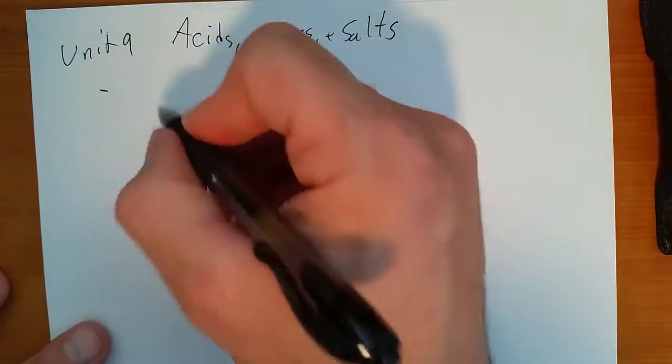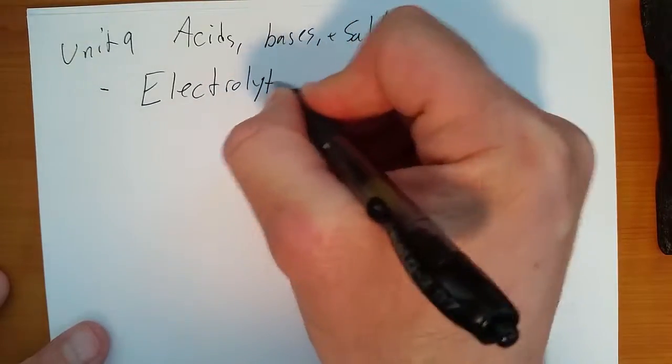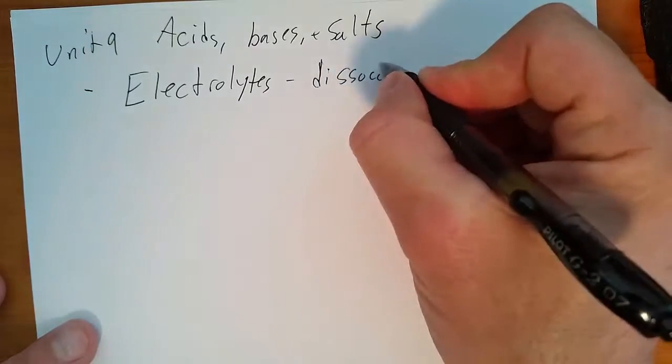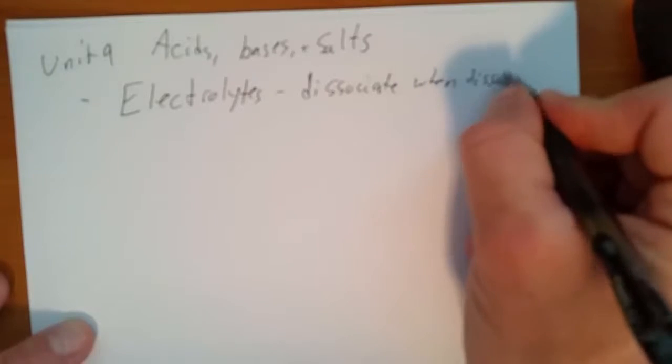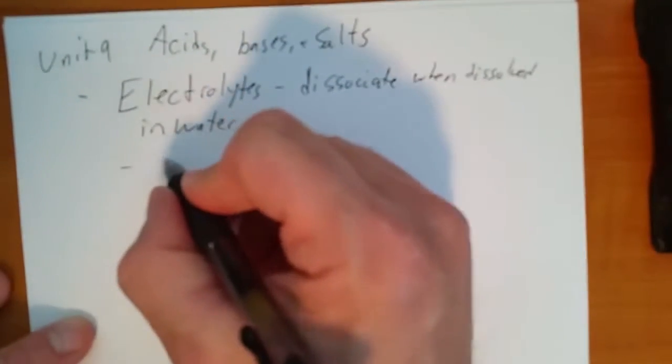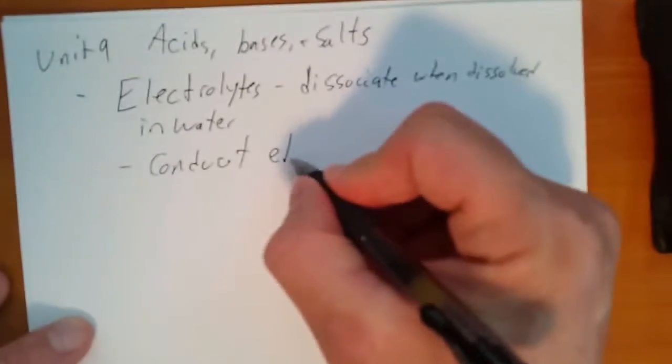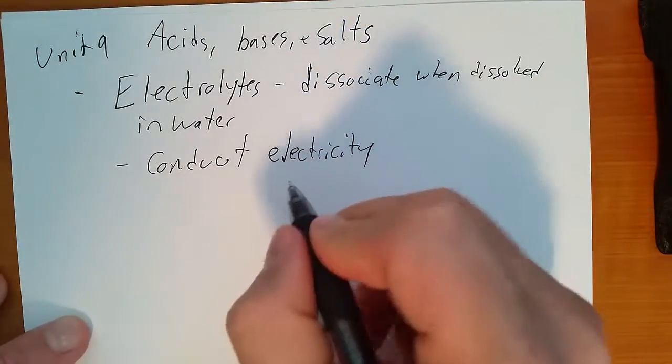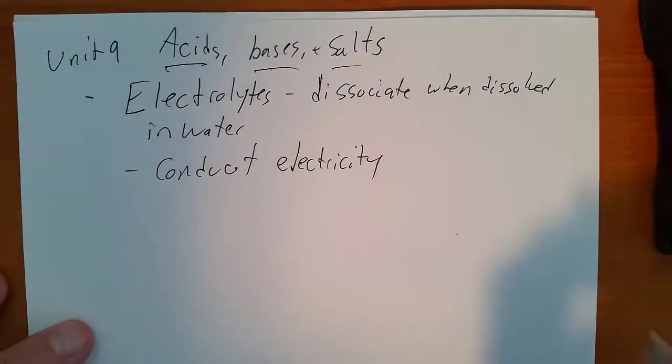All right, so one of the earlier things we talked about was electrolytes. Electrolytes dissociate when dissolved in water and then conduct electricity, which is why they're called electrolytes. Electrolytes are acids, bases, and salts.